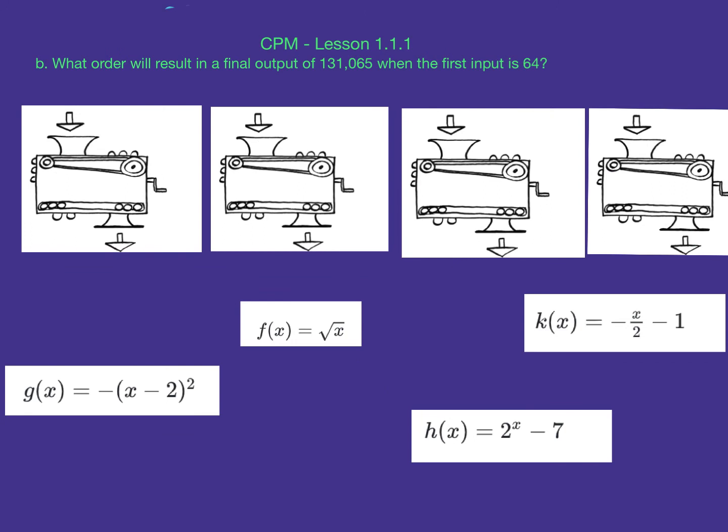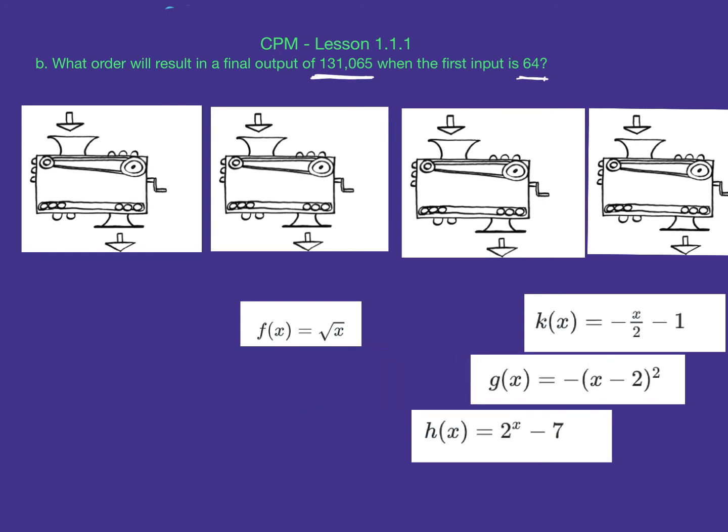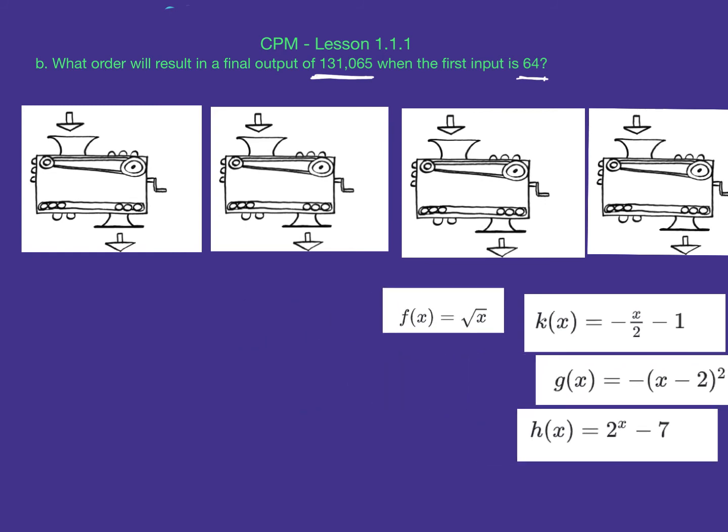This problem was very similar to the last problem, just trickier because they're asking us to come up with 131,065 with an input of 64. If you're like me, your first instinct is to go to the f function. I knew that f(64) equals 8, and there were other things I could do. So let's dive right in and figure it out instinctually.